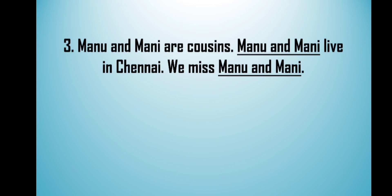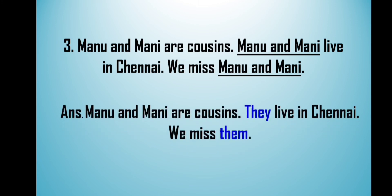Next: 'Manu and Mani are cousins. Manu and Mani live in Chennai. We miss Manu and Mani.' In both places the underlined words are 'Manu and Mani.' In the first sentence they are the subject, and in the second they are the object. So we change the first instance to 'they' and the second to 'them.' The final answer is: 'Manu and Mani are cousins. They live in Chennai. We miss them.'